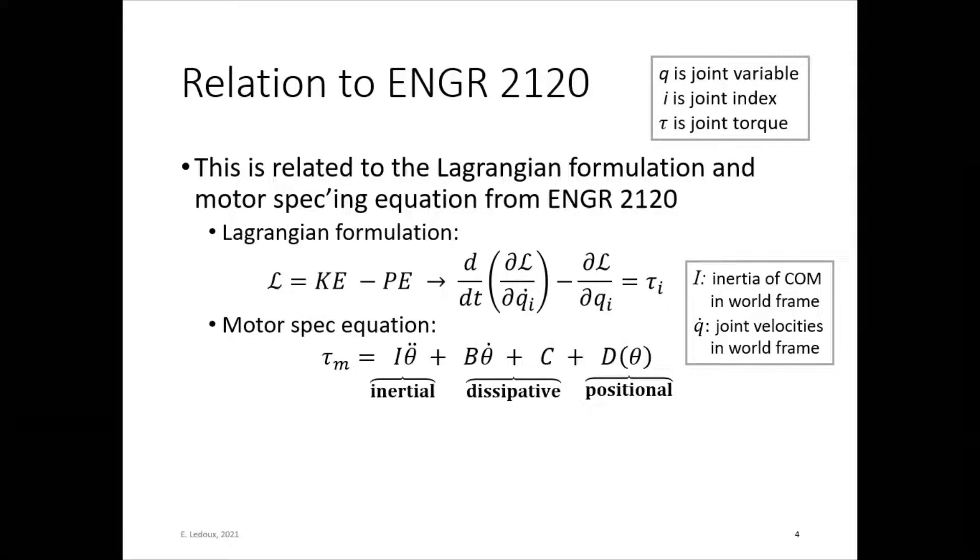So here is the motor spec equation below for world reference, where the motor torque is proportional to the inertial term, which is multiplied by acceleration, the friction, the dissipative term, and the positional torque. Where I is the inertia of the center of mass in the world frame, and q̇ is the joint velocities also given in the world frame.